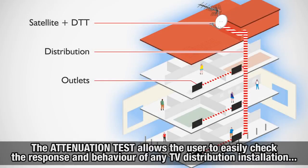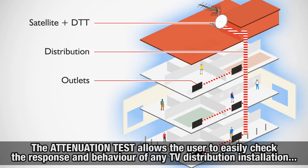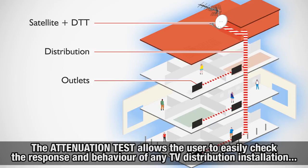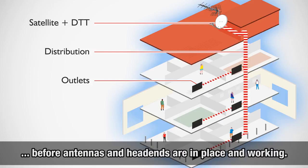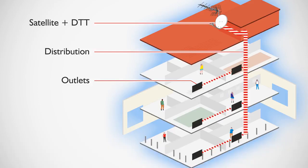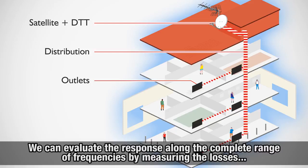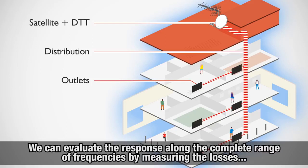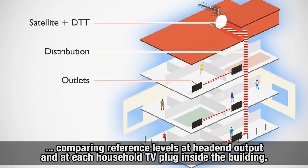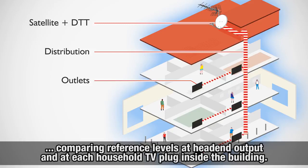The attenuation test allows the user to easily check the response and behavior of any TV distribution installation before antennas and headends are in place and working. We can evaluate the response along the complete range of frequencies by measuring the losses in the distribution of TV signals, comparing reference levels at headend output and at each household TV plug inside the building.